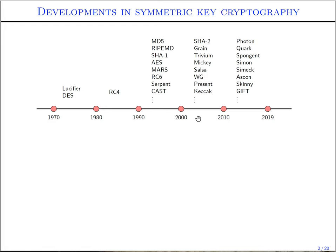Around 2013 we have seen the CAESAR competition for authenticated encryption, which was recently finished. So we now have lots and lots of symmetric key primitives.